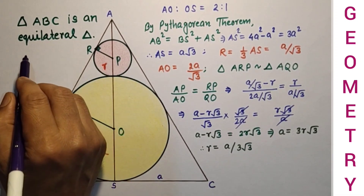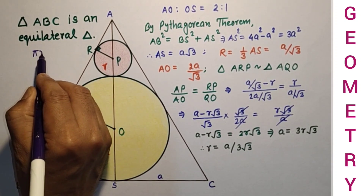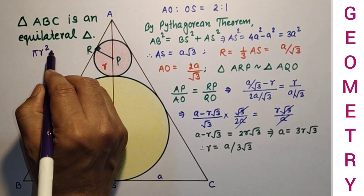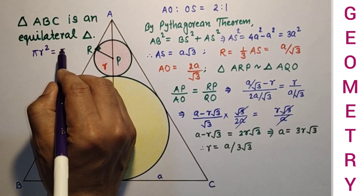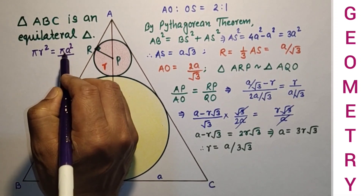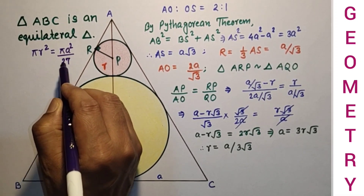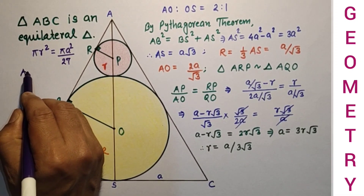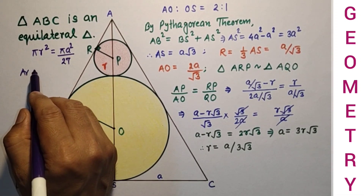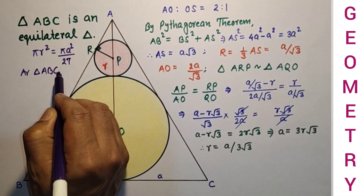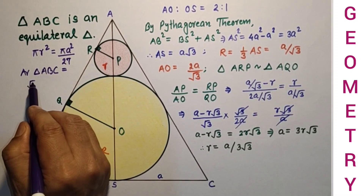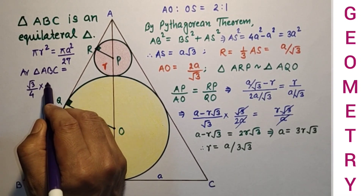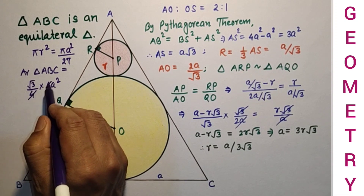The area of the smaller circle is pi r squared, and since r equals A upon 3 root 3, we have r squared equals A squared divided by 9 times 3, which is 27. So the area of the smaller circle equals pi A squared upon 27. The area of the equilateral triangle ABC equals root 3 by 4 times side squared, where the side is 2A, giving root 3 by 4 times 4A squared, which simplifies to root 3 A squared.